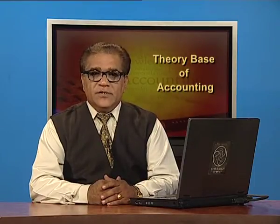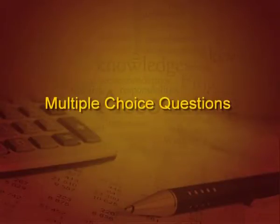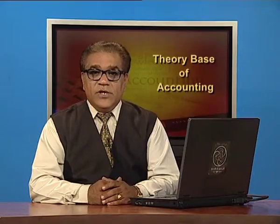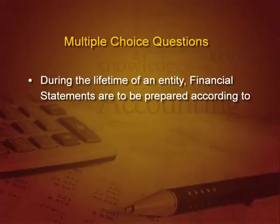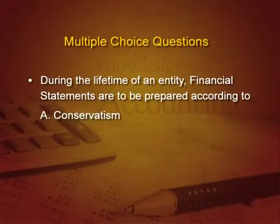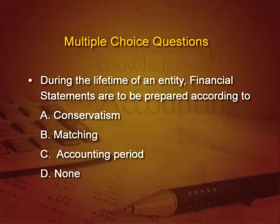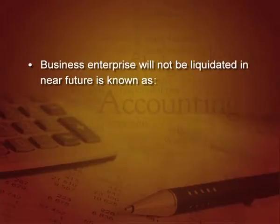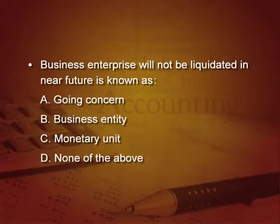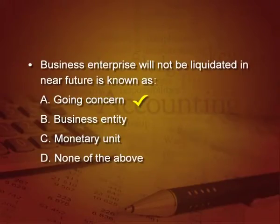Now let us see what we have gained during this discussion. Here are some multiple choice questions. If during the lifetime of an entity the financial statements are to be prepared, it is according to which concept? Options: A — Conservatism, B — Matching, C — Accounting Period, D — None. Yes, it is Accounting Period. You are right. Next question: Business enterprise will not be liquidated in the near future is known as which concept? Options: Going Concern, Business Entity, Monetary Unit, None of the above. Yes, it is Going Concern. Again, you are right.